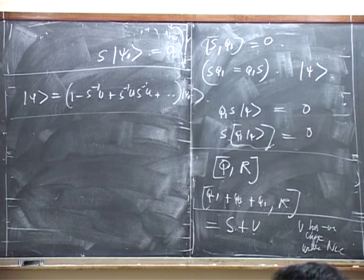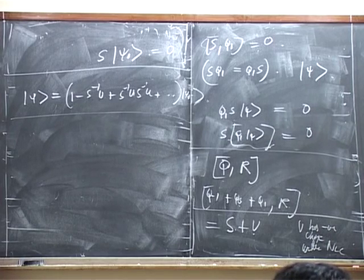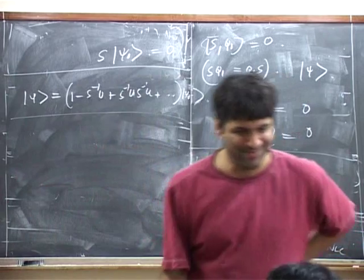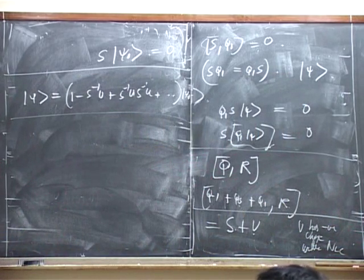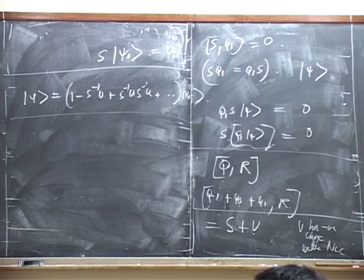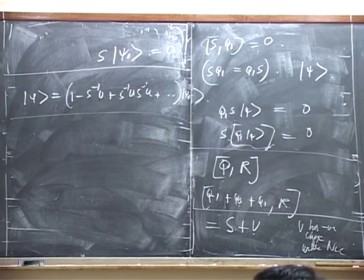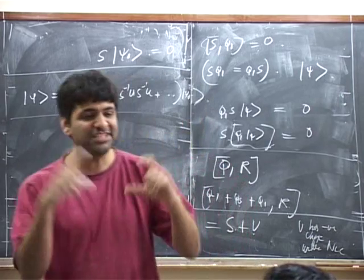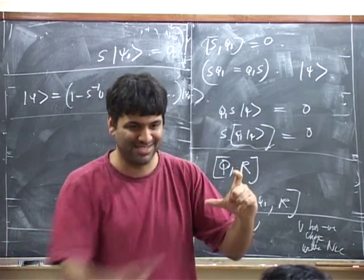The reverse construction is also true, for the same reason, because you can write S as S plus U minus U, and the same argument goes through. Basically, this map between kernels is a very general property of lower triangular matrices.